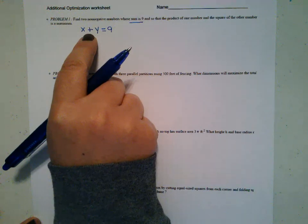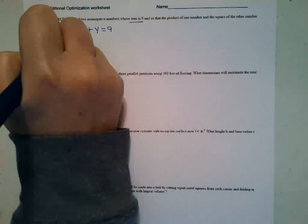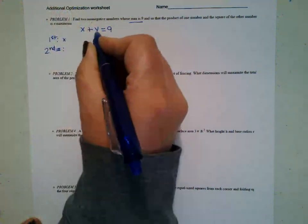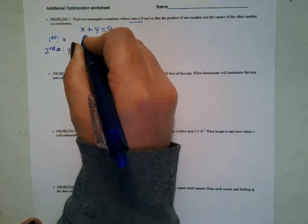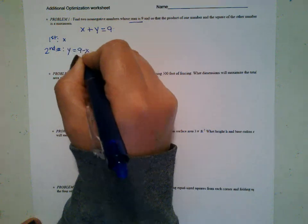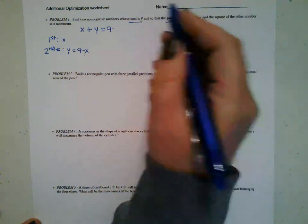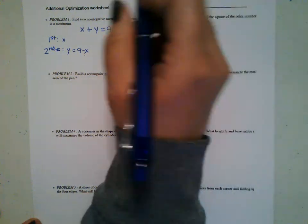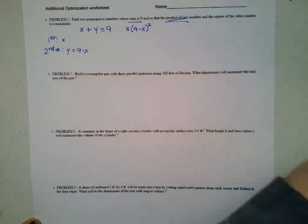Let me go back over here. I need two numbers. The first number I'm going to call X. My second number is Y, but if I solve Y and subtract X from both sides, it's the same as nine minus X. So I'm going to use X and nine minus X when I go to find the product of one number and the square of the other, and find when that is a maximum.